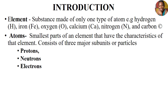The basic elements that we commonly use in biology are calcium, nitrogen, carbon, oxygen, hydrogen, and so on. Let's start with the atom. By definition, an atom is the smallest part of an element and it will present with the characteristics of that element.